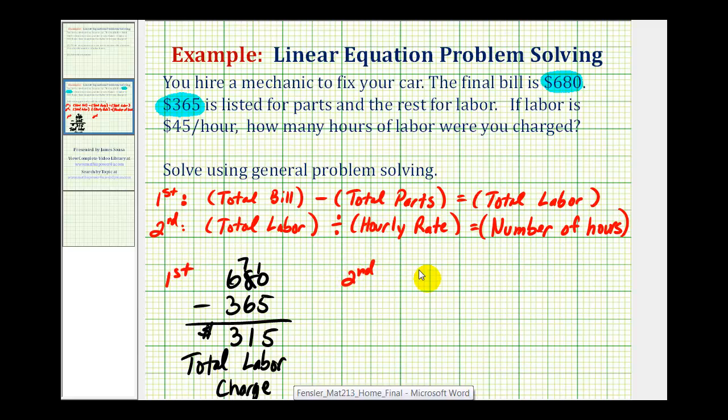So we're going to have three hundred fifteen divided by forty-five. And this is not an easy question, but let's go ahead and try seven. And we'll multiply. Seven times five is thirty-five, carry the three. Seven times four is twenty-eight, plus three is thirty-one, so that's good. Notice how our remainder is zero. Therefore, this tells us that we were charged seven hours at forty-five dollars an hour.